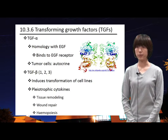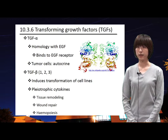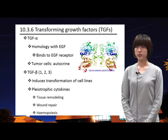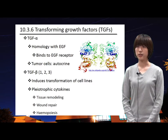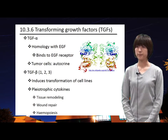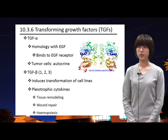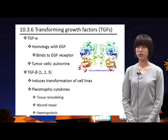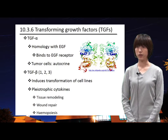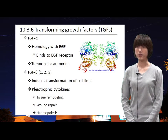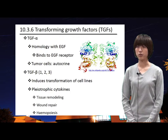TGFs are another family of polypeptide mitogens, including TGF-alpha and TGF-beta. TGF-alpha is initially synthesized as an integral membrane protein; proteolytic cleavage releases the soluble growth factor, which exhibits high amino acid homology with EGF. Therefore, it induces its biological effects by binding to the EGF receptor. It is synthesized by various body tissues as well as tumor cell types, for which it can act as an autocrine growth factor.